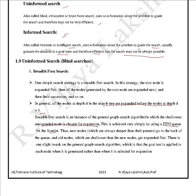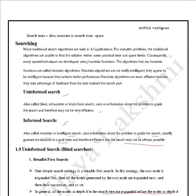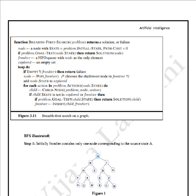New nodes go to the back of the FIFO queue, and old nodes which are shallower than the new nodes get expanded first. New nodes are added at the end of the queue. There is one slight tweak on the general search algorithm: the goal test is applied to each node when it is generated rather than when it is selected for expansion. We apply the goal test whenever we are choosing a node for expansion to identify whether it is the goal node.